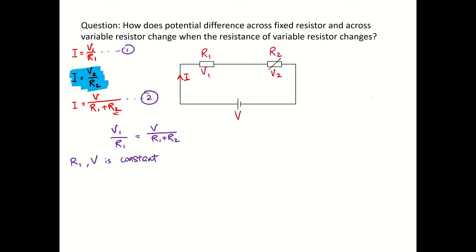We don't know V1 for sure, because when R2 changes, the current flowing through the circuit will definitely change, so V1 is going to change too. Now we're going to look at the right hand side of the equation: V over R1 plus R2.